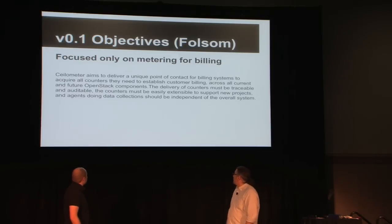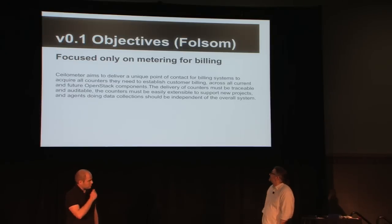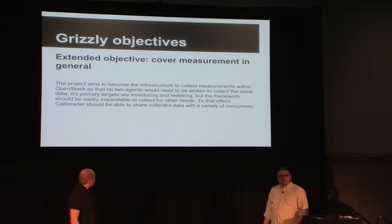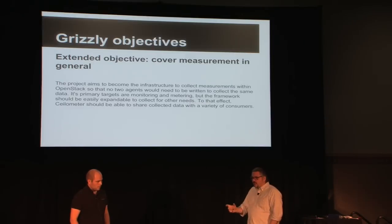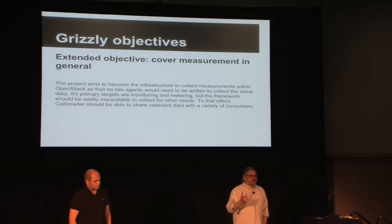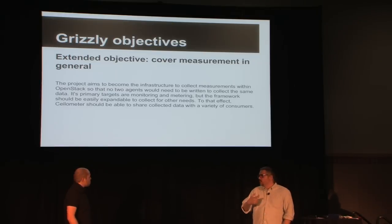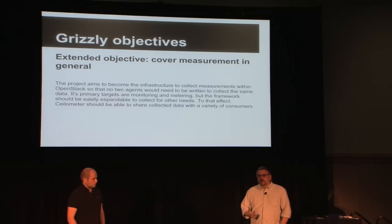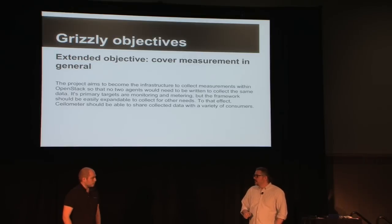For Folsom, our goal was basically focusing on metering. For Grizzly, we decided to extend — from metering we went into metrics in general. We decided to extend the scope of Ceilometer to allow anyone that needed to collect information from OpenStack to have a single place to do it from. We would do the collecting and allow the sending of this collected information to multiple destinations. That was the result of the Grizzly Summit six months ago, and we are quite happy with the result.